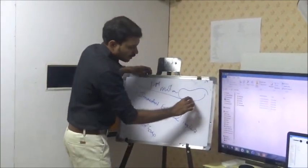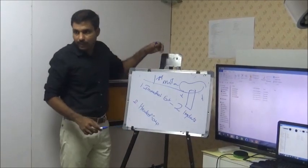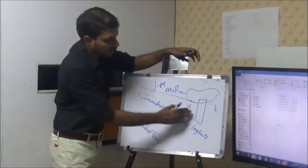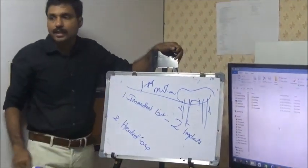So this is the molar. And if you are placing one implant, this becomes the cantilever. Mesially, this becomes the cantilever. So if you put it like this, then the cantilever effect is avoided.